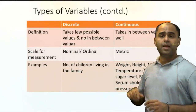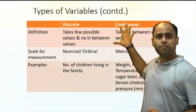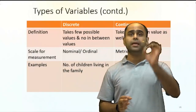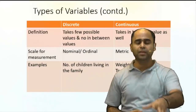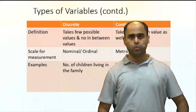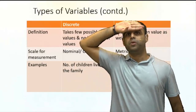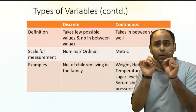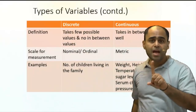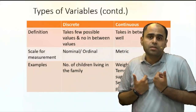The next classification is discrete versus continuous. Continuous variables can take in-between values — my weight 80.6, my height 180.2, my temperature 37.6 — decimals are possible. Discrete variables can never take decimals — for example, the number of brothers and sisters I have.